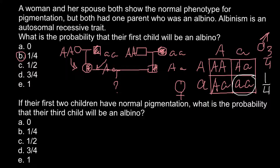Once again, we have two heterozygous parents. If the first two children are phenotypically normal and belong to one of those genotypes, what are the chances that the third child would be albino? In order to solve this, we need to understand that when a child is born, it can receive a random genotype according to the Punnett square, but this has no influence on the genotype of the following child.